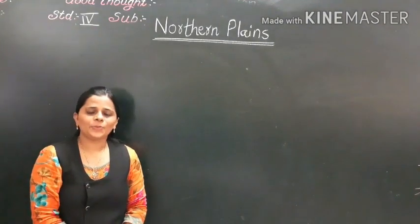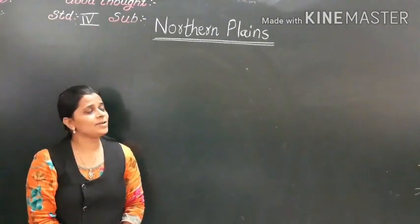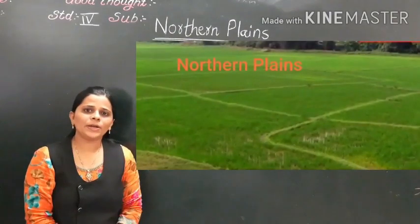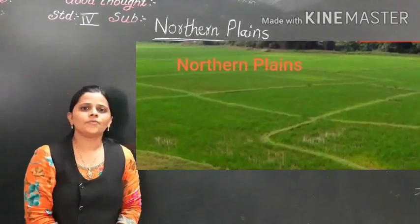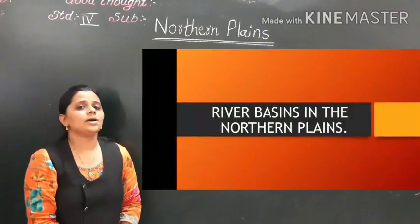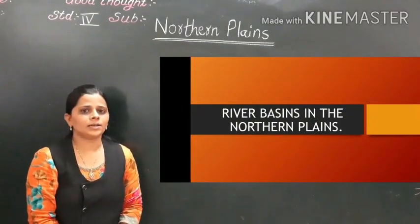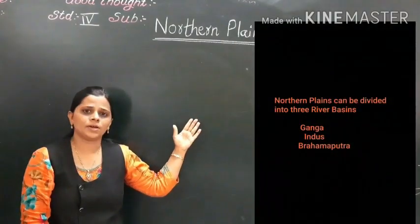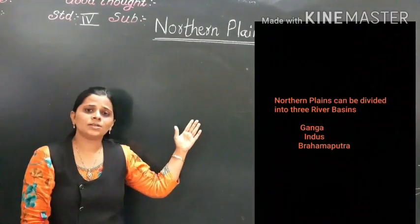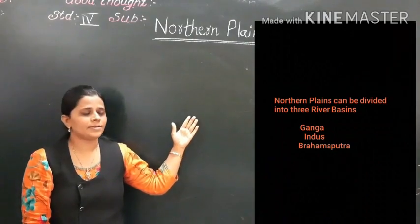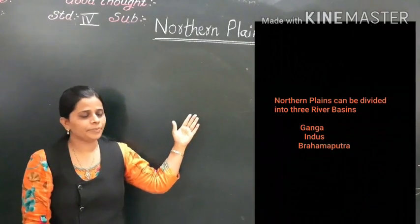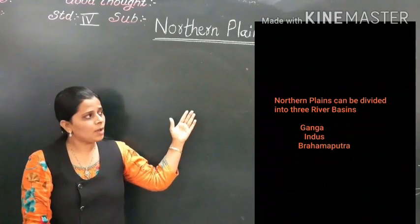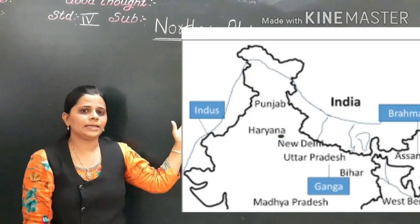Hello children, I hope you all are doing well. This is our second video of the Northern Plains. We are going to learn about the river basins in the Northern Plains. The Northern Plains can be divided into three river basins: Ganga, Indus, and Brahmaputra.